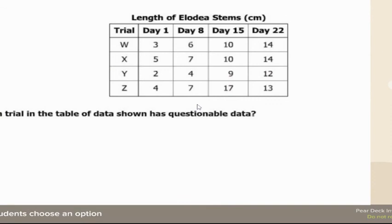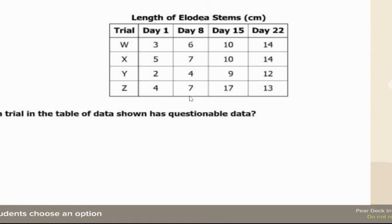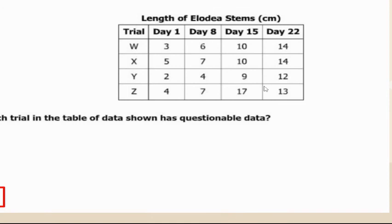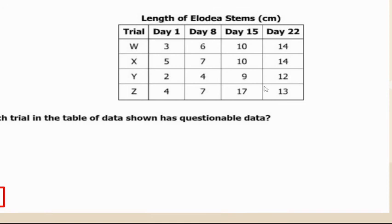Which trial has questionable data? We're looking for any trial that looks really different, maybe doesn't make sense, or has fluctuations. That would be Z — it is different from all the others with the highest value of 17. If you see something out of the ordinary, it's potentially questionable data due to some sort of error.